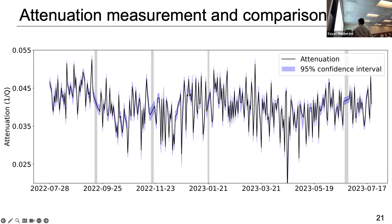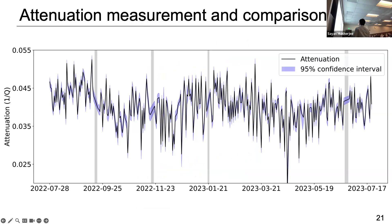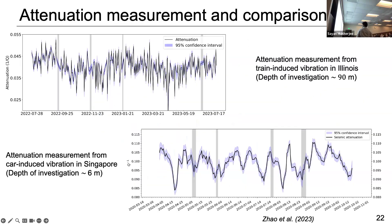This is the one-over-Q for the whole year. It looks very spiky and high-frequency — that's the nature of the raw measured attenuation. We can still see some seasonal changes in there. In the next slide, we'll see whether it makes sense — whether the values are reasonable.